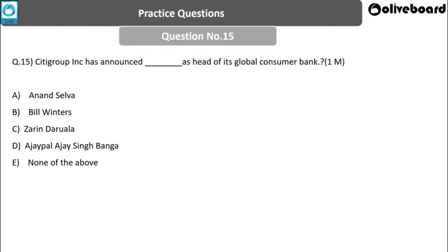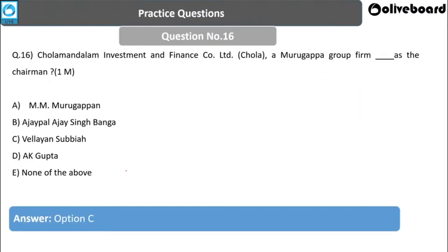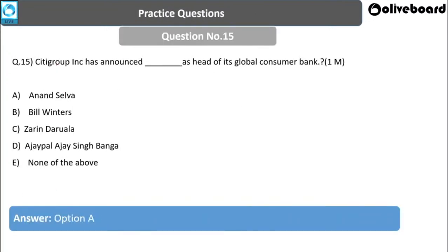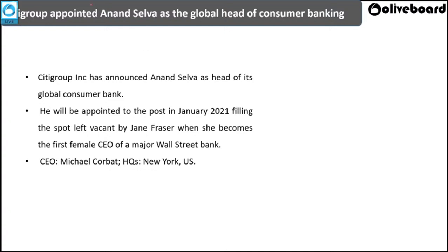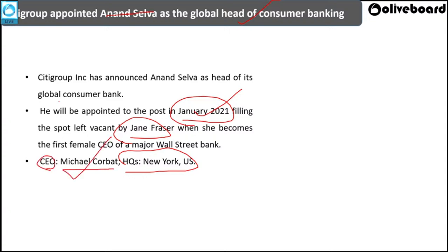Next question: Citigroup Inc. announced who as the head of its Global Consumer Bank? Options: Anand Selva, Bill Winters, Zarin Daruwala, Ajay Singh Banga, or None of the above. The answer is Anand Selva. Citigroup appointed Mr. Anand Selva as the head of its Global Consumer Bank from January 2021 onwards, succeeding Ms. Jane Fraser who was previously heading the position. Citigroup is headquartered in New York, US, and the current CEO is Mr. Mike Corbat.